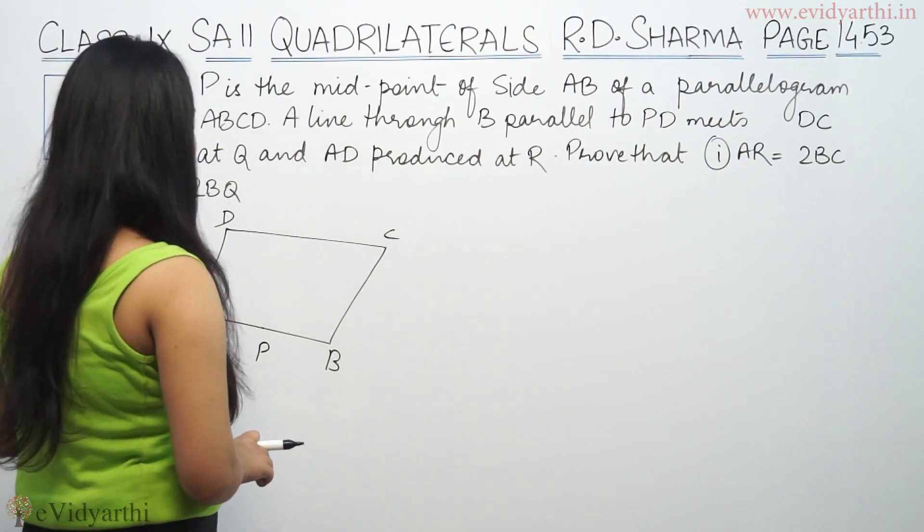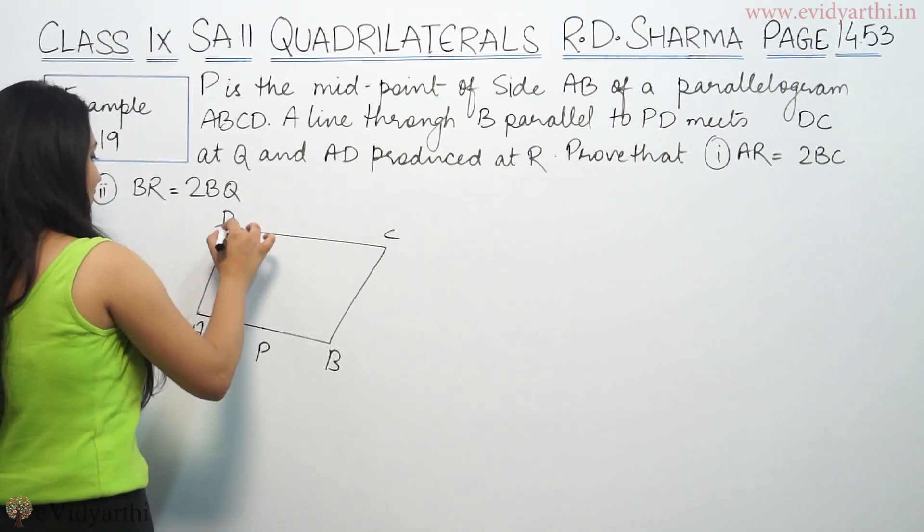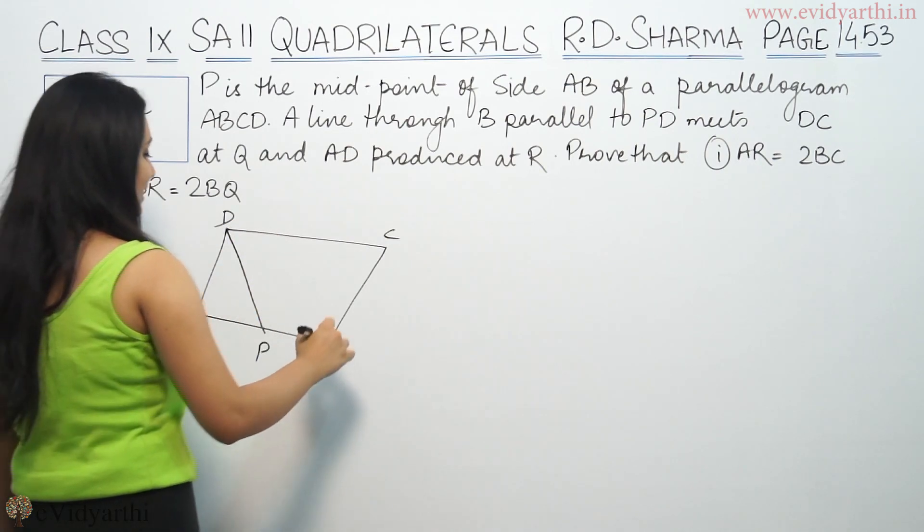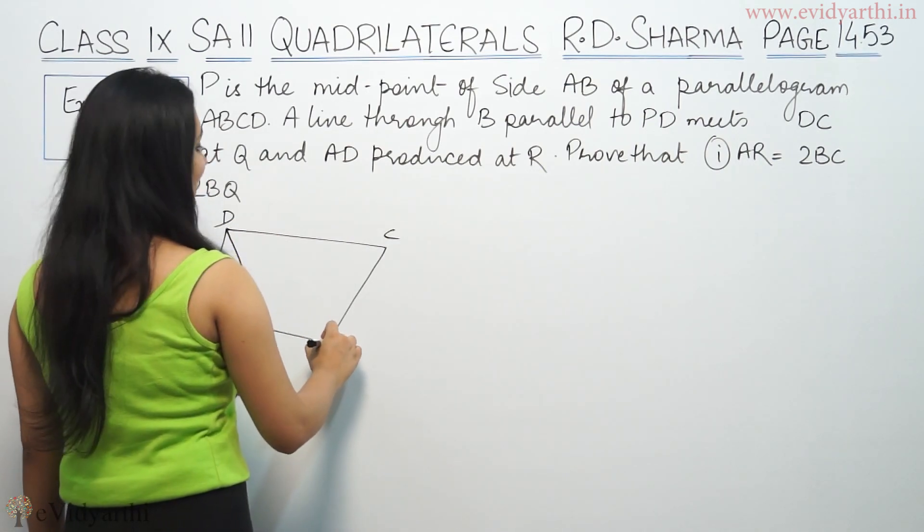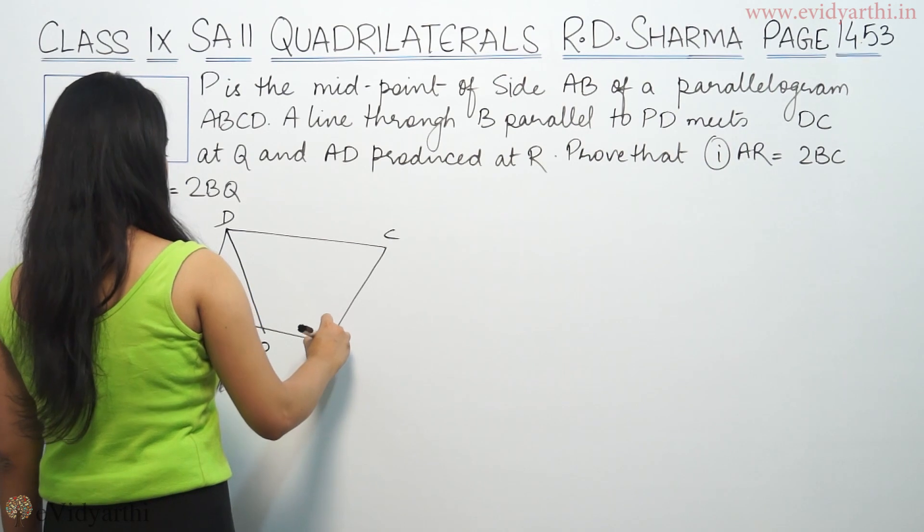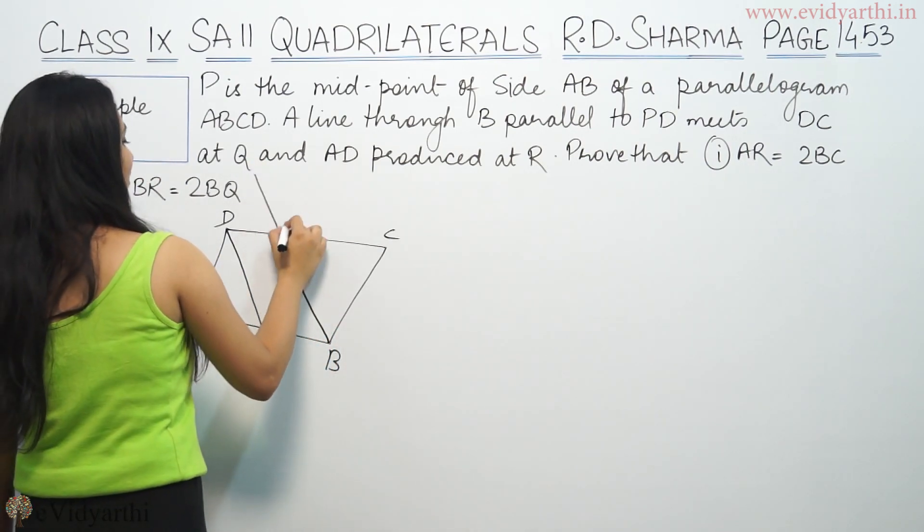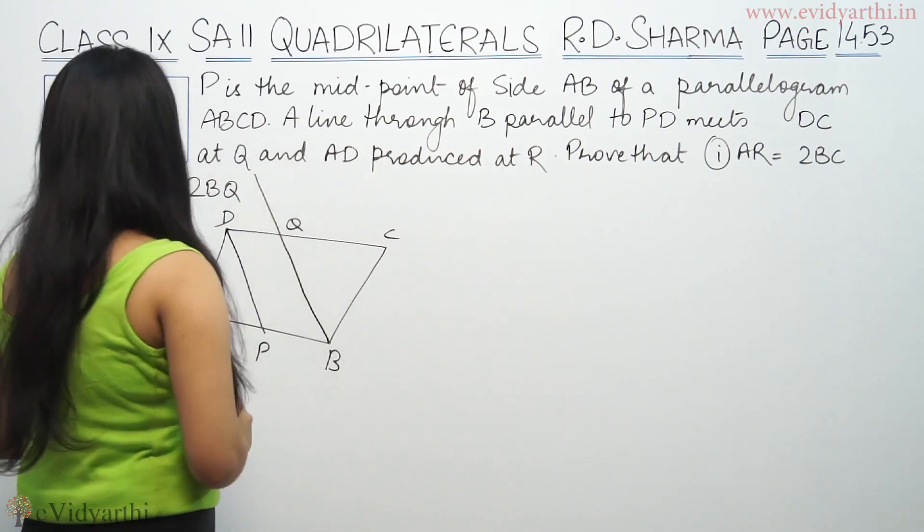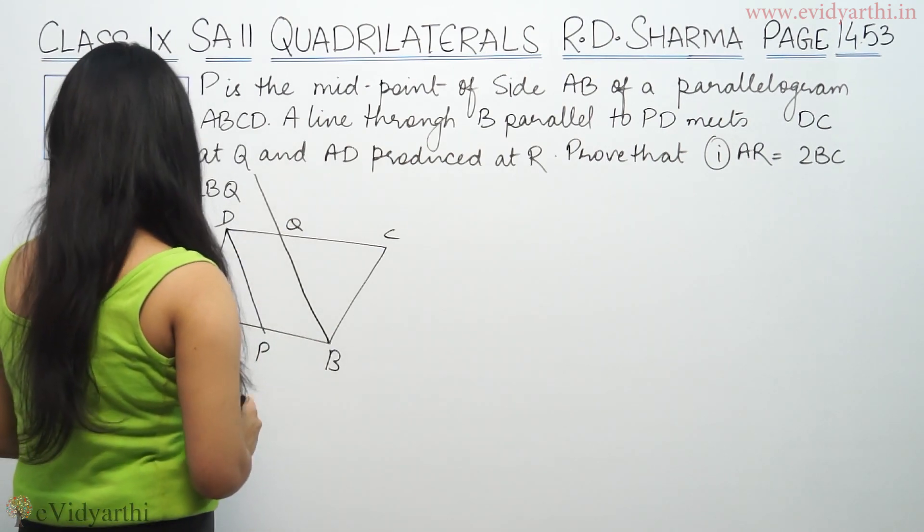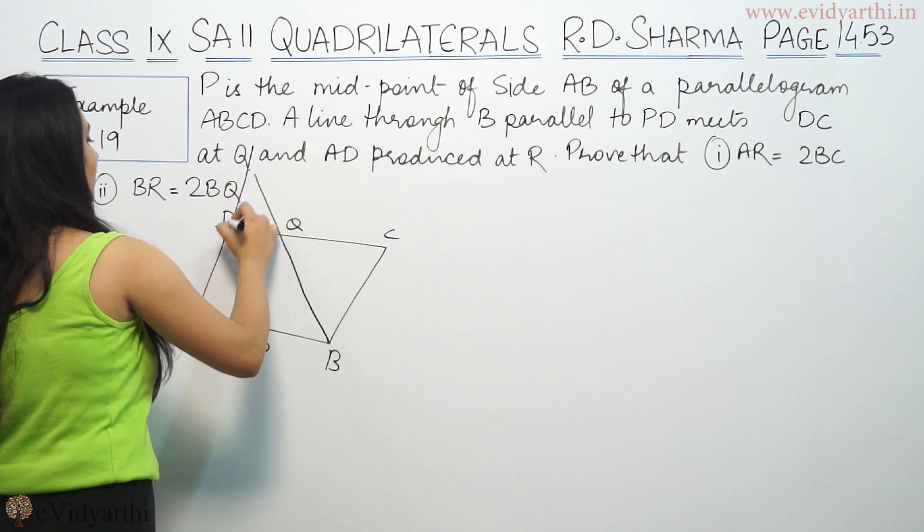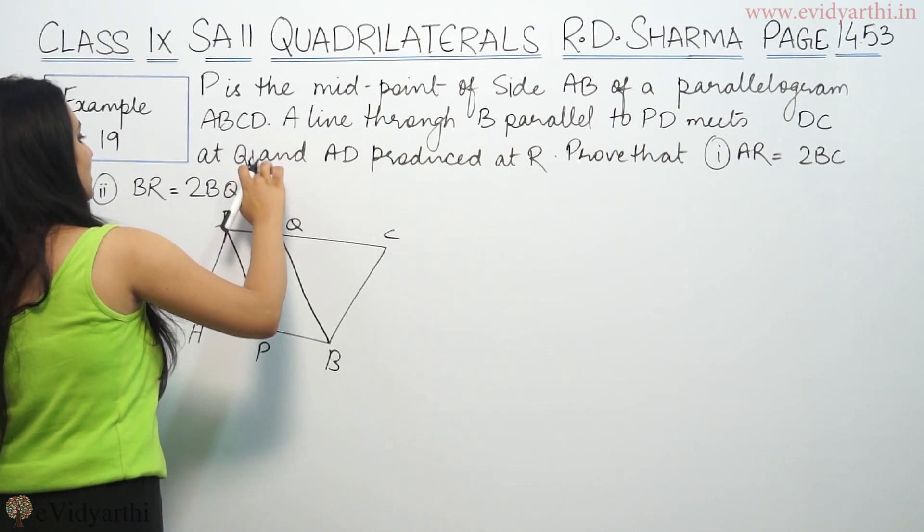A line through B parallel to PD meets DC at Q and AD produced at R. So this is R.